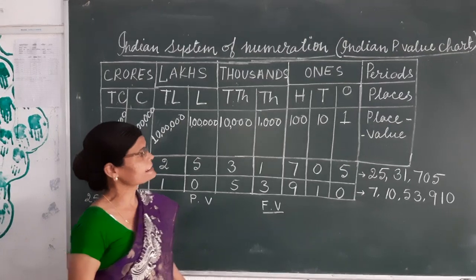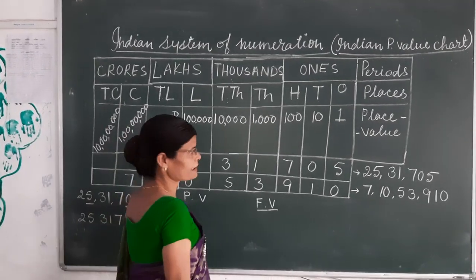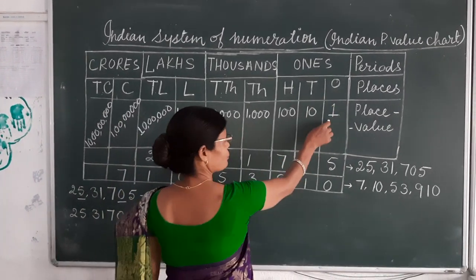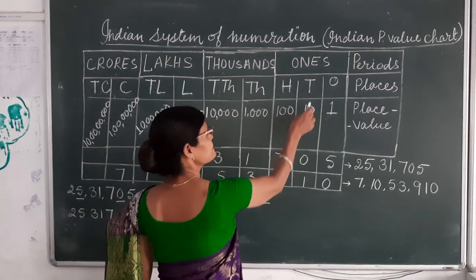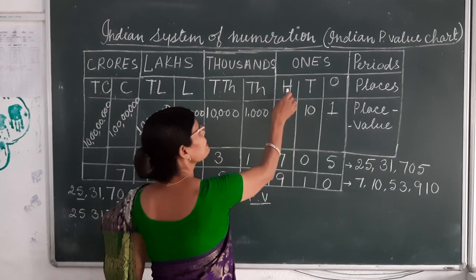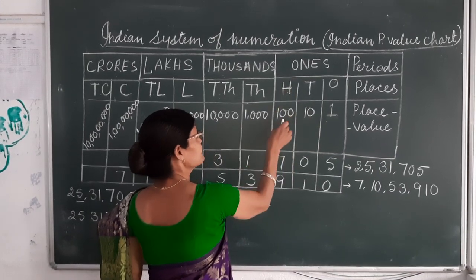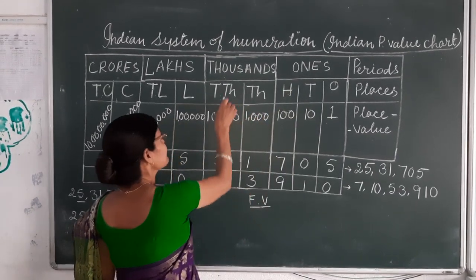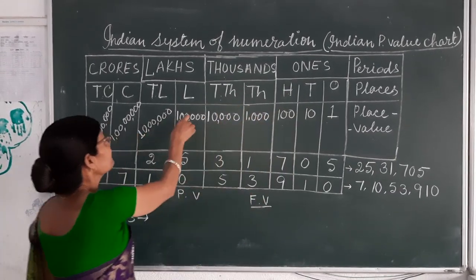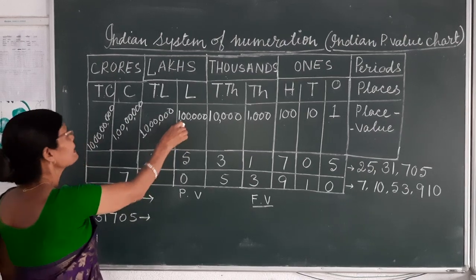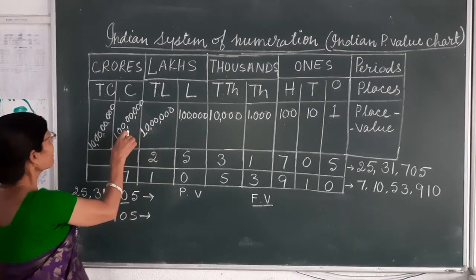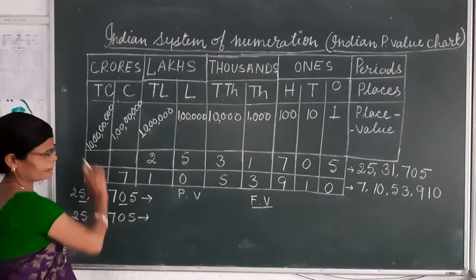We can see the numerical panel. Ones means 1, Tens means 10, Hundreds means 100, Thousands, Ten Thousands, Lakhs, Ten Lakhs, Crores and Ten Crores.